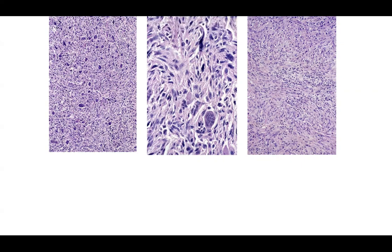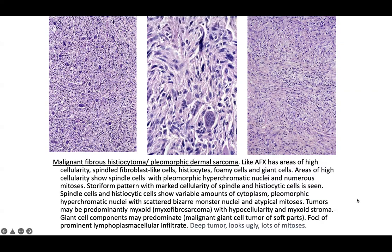Pleomorphic dermal sarcoma or AFX: high cellularity, spindle fibroblast-like cells and histiocytes, possible foamy cells and giant cells. Features include pleomorphic hyperchromatic nuclei, numerous mitotic figures, and possible storiform pattern. CD34 negative (to exclude DFSP). Histiocytic cells can show variable cytoplasm, pleomorphic hyperchromatic nuclei, bizarre monster nuclei, and atypical mitotic figures.